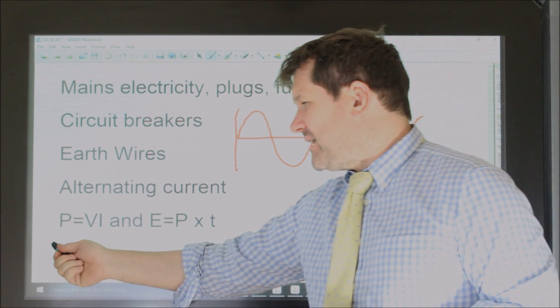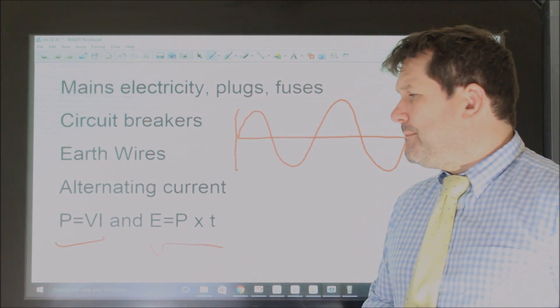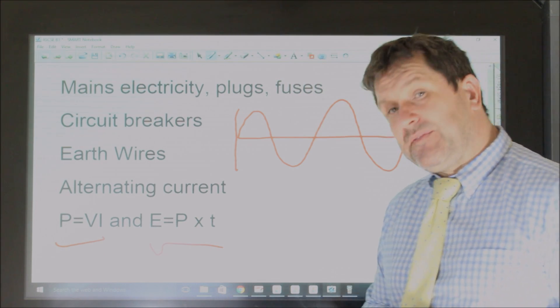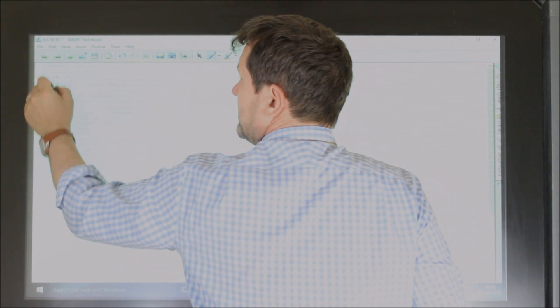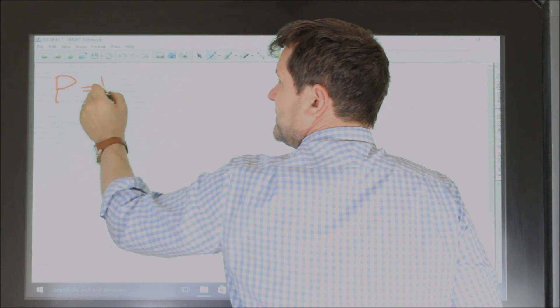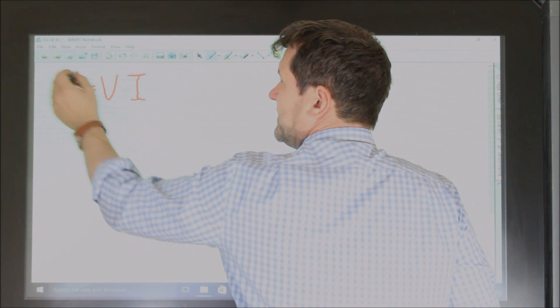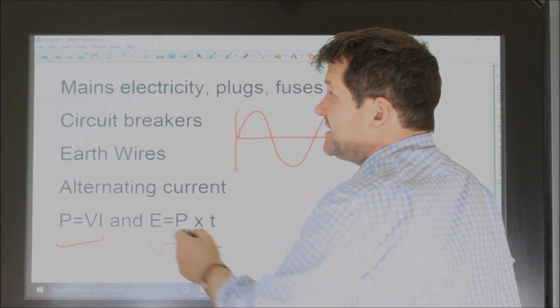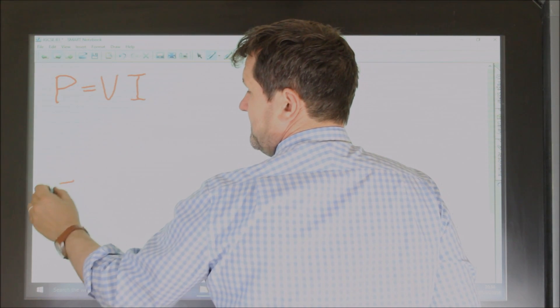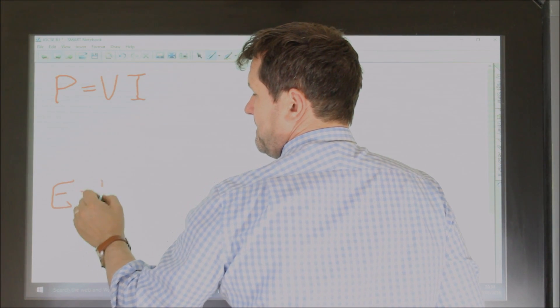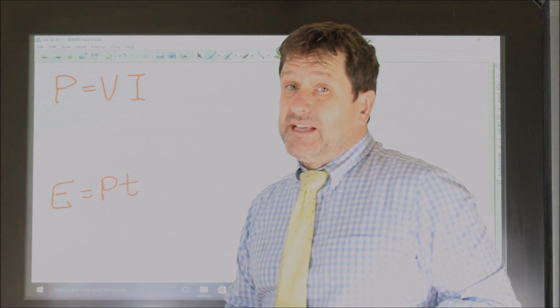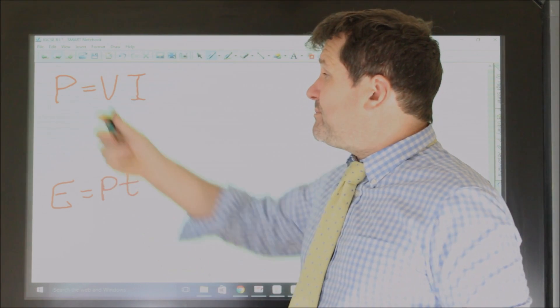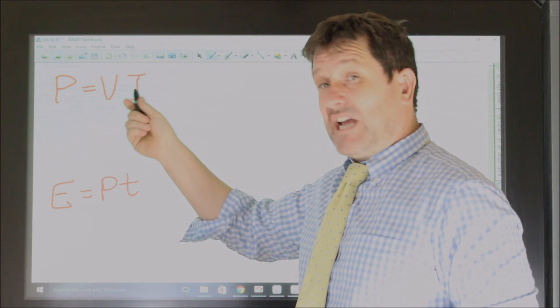And what is important for now is this: Power is voltage times current, and energy is power times time. So if you just look, there are two equations. P equals VI, and our other equation, energy is power times time. Now then, the first one, P is VI, all this means is power is voltage times current.